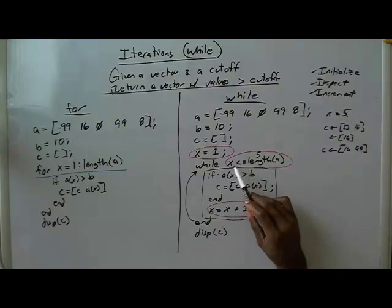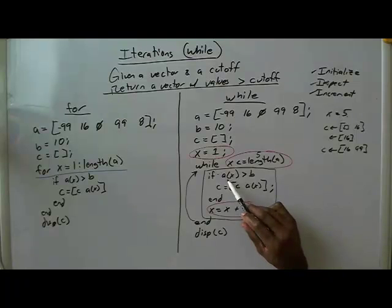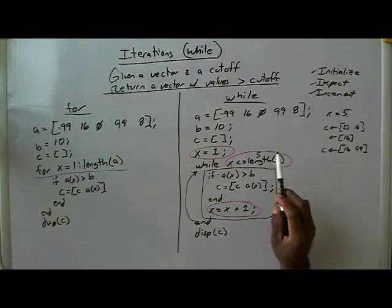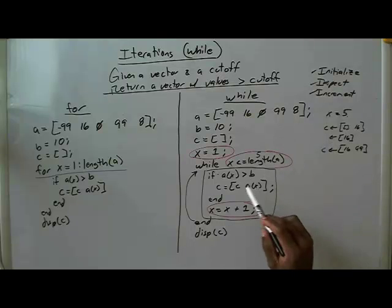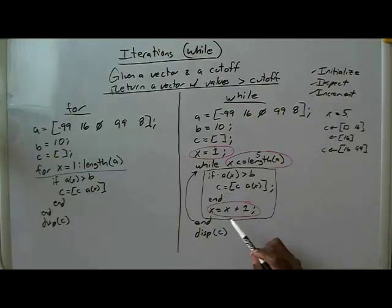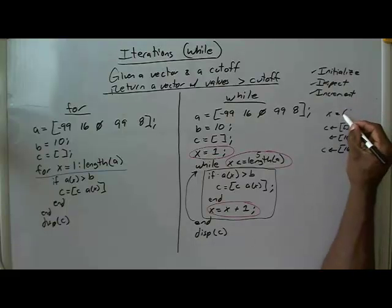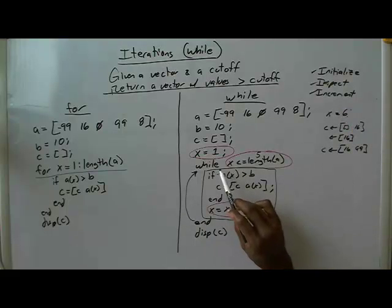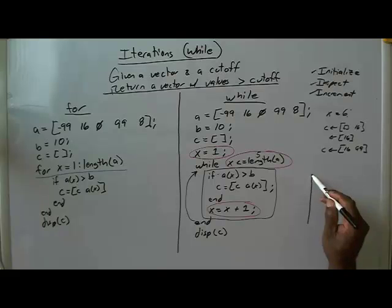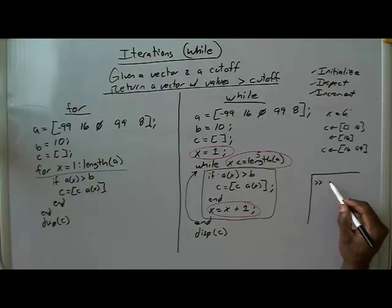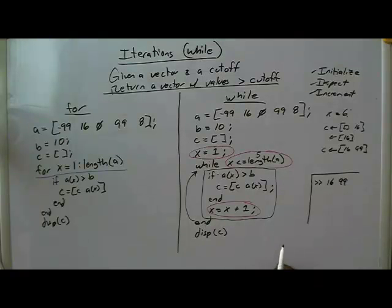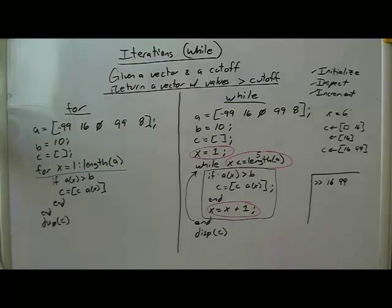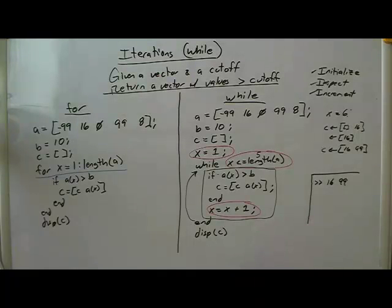We increment x once more, so now x is 5. Back to the top — is 5 less than or equal to 5? Yes. Is A indexed at 5 greater than B? A at 5 is 8, B is 10 — no, that's not true. We come down, x gets x plus 1, so x is now 6. Back to the top — is 6 less than or equal to 5? No. So we exit the loop and display C. What gets displayed is 16 and 99. Put it in MATLAB, use the breakpoints, step through it, and convince yourself that this works.